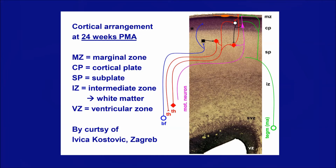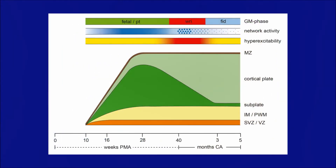The subplate is, however, a temporary structure. The lower part of the diagram depicts the developmental changes in the subplate. The subplate is thickest between 28 and 34 weeks gestation. Thereafter, the subplate neurons die off and later generated neurons start to populate the cortical plate. Around 3 months past term, the subplate has disappeared in the primary motor and sensory areas.